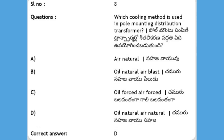Next, which cooling method is used in pole-mounted distribution transformers? Options: A) air natural, B) oil natural, C) air blast, D) oil forced air forced. The answer is oil natural, air natural.